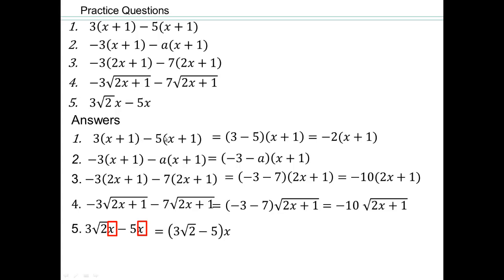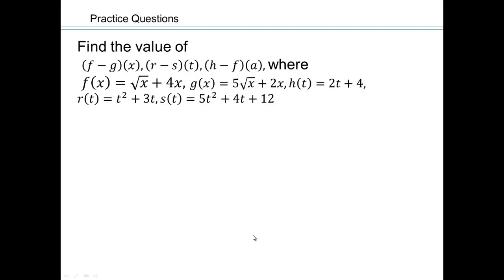Let's just go over them. Like terms here is (x + 1). 3 minus 5 is -2. Here we have -3 minus a of (x + 1). Nothing we can do about them. -3 minus 7 gives me -10. Same thing here, except the unit is √(2x + 1). And here we have x is our unit and 3√2 minus 5, and we can't really do anything about that.